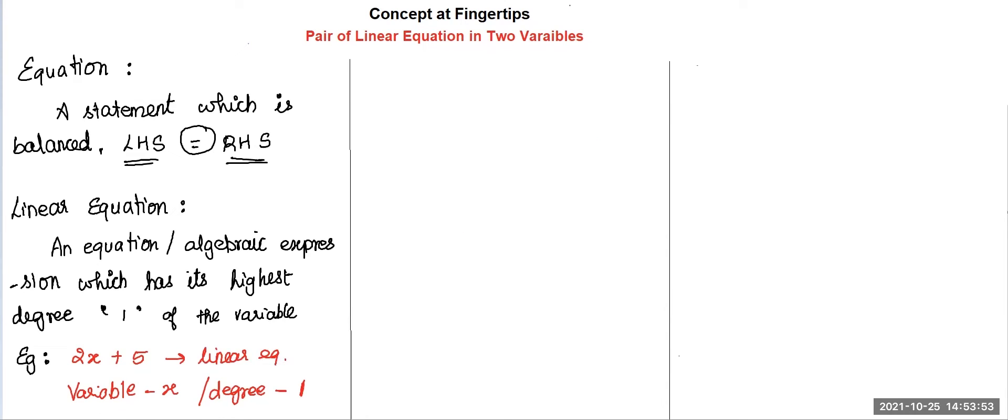Now, what is linear equation in two variables? An equation of the form ax + by + c equals 0 is called a linear equation in two variables.